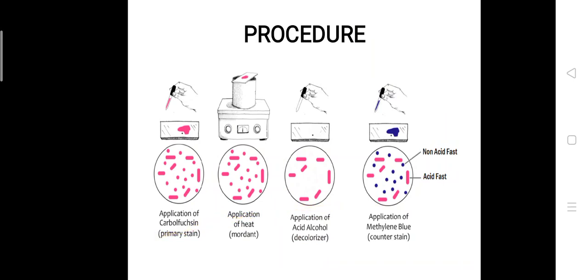Let us see the procedure of this acid fast staining. Firstly, you have to prepare bacterial smear on clean and grease free slide using a sterile technique. Then allow smear to air dry and then heat fix. Then cover the smear with carbolfuchsin stain and heat the stain until vapor begins to rise. Do not overheat your stain.